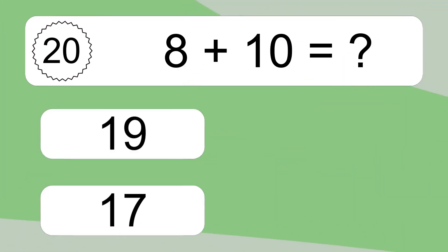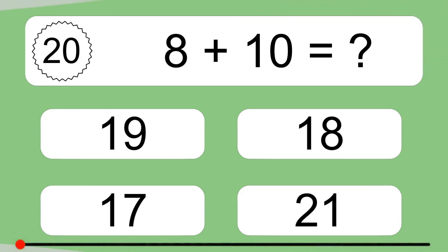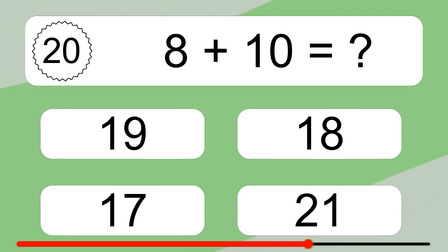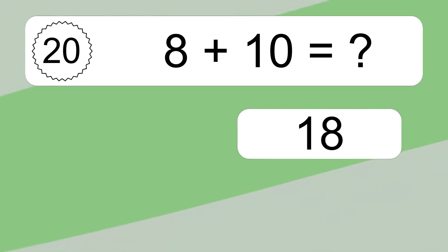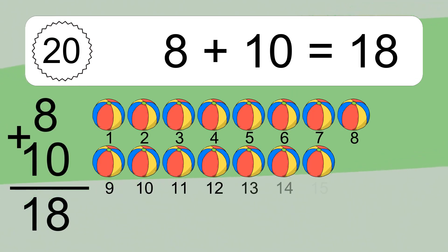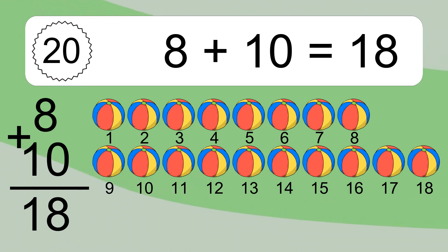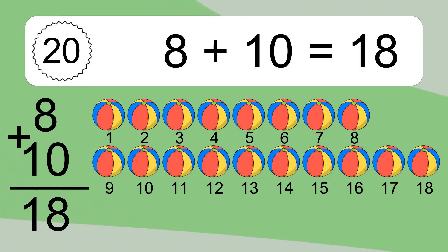8 plus 10 equals what? 8 plus 10 equals 18. Let's count it: 1, 2, 3, 4, 5, 6, 7, 8, 9, 10, 11, 12, 13, 14, 15, 16, 17, 18.